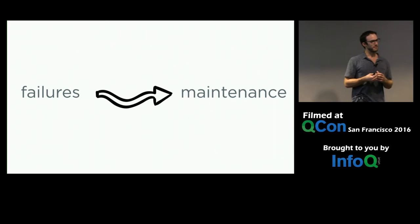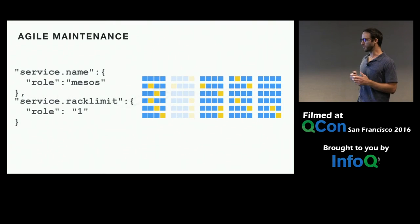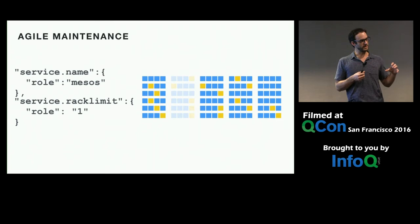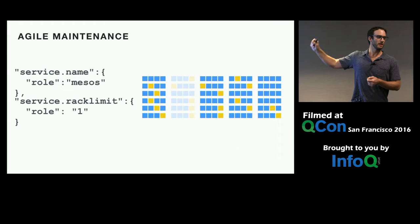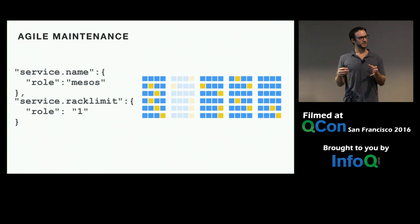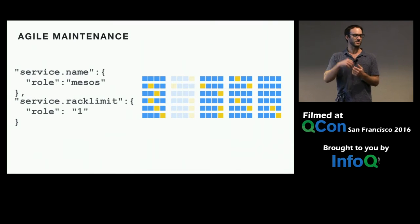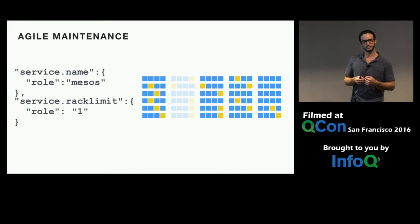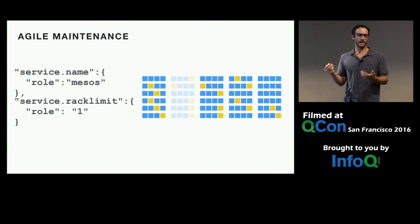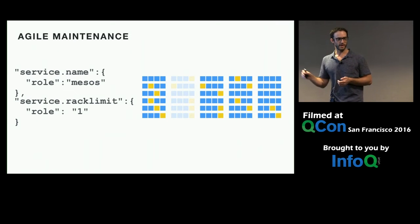Now let's talk about maintenance — how do we do it without impacting users? We also have our own rack limit concept, set to one, telling other infrastructure teams that we're okay if an entire rack just goes away. This is really important because it means network engineering can do maintenance on a top-of-rack switch without asking our permission — they can just take the entire rack offline without impacting us or our customers. Site ops can yank a machine to replace a bad disk or DIMM. It just doesn't matter.